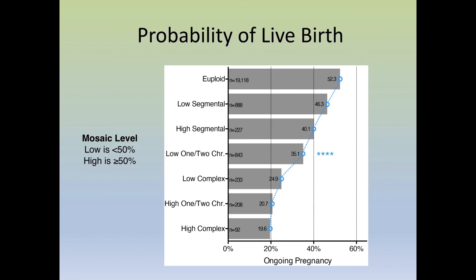This table is generated from a publication from the Zouves Foundation, looking at 1,000 mosaic embryos transferred. A euploid embryo across the board will have about a 52% chance of resulting in an ongoing pregnancy. A low-level or high-level segmental shows very little difference — 46% and 40%. A low-level one or two-chromosome mosaic embryo has an ongoing pregnancy rate of around 35%, 25% for a low-level complex, 21% for a high-level one or two-chromosome mosaic, and down to just around 20% for a high-level complex mosaic.